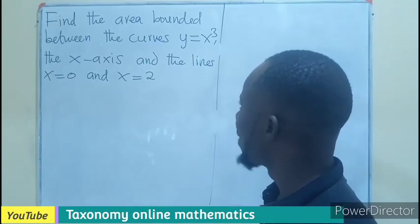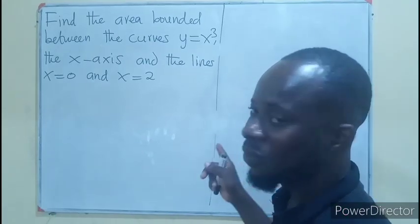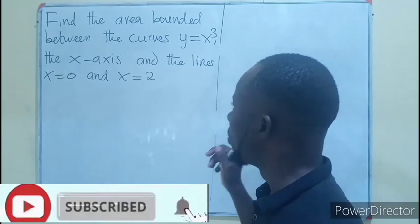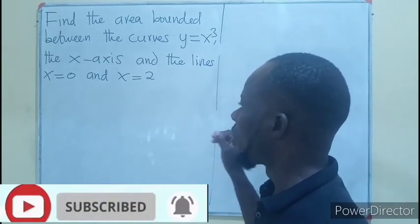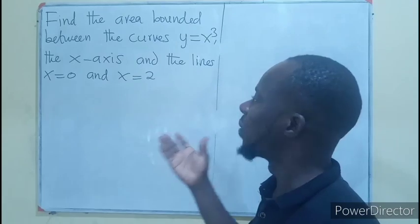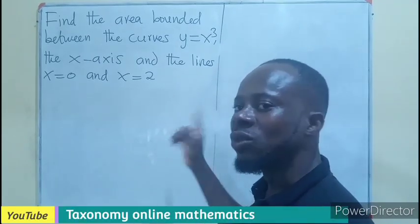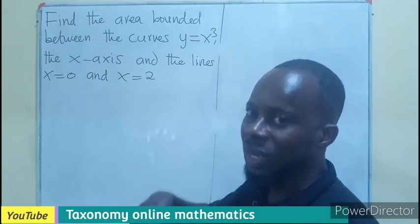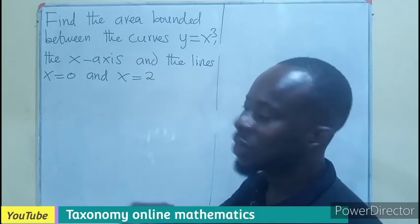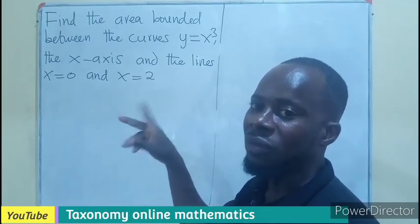So we are finding the area bounded between the curve y equals x cubed and the x-axis, and the lines x equals 0 and x equals 2. So x equals 0 and 2 become the limits of integration. We need to integrate with these being the limits of integration.